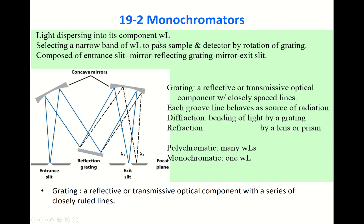Now let's turn to monochromatic light — dispersing light into its component wavelengths. An ordinary light source generates continuous light over a certain wavelength range, so you first select specific wavelengths using a monochromator. This involves selecting a narrow band of wavelengths to pass through to the sample and detector, controlled by rotation of a grating.